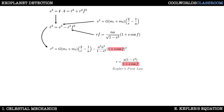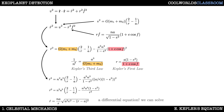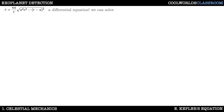Let's recall Kepler's first law to replace the (1 + e·cos f) term, and use Kepler's third law to switch from the masses to n²a³. Multiplying out the bracket and taking a square root while pulling out the common factors, we get what we want: r-dot in terms of r with no f's remaining. This is a differential equation that we can solve.